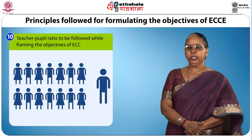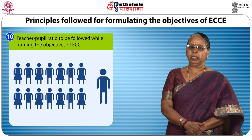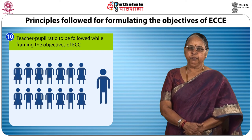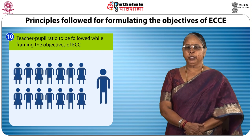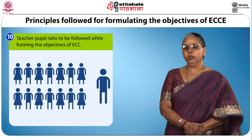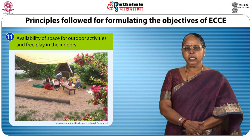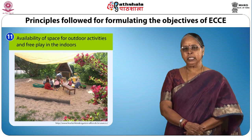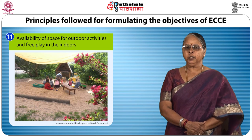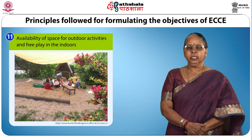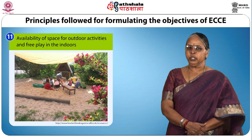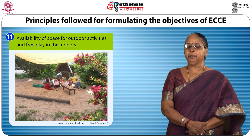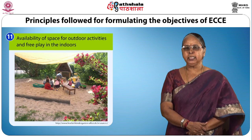The teacher-pupil ratio is to be followed while framing objectives of ECCE. In urban areas, the teacher-pupil ratio can be 1 to 25 and in rural areas 1 to 40. The last principle is availability of space for outdoor activities and free play, and equipment available based on the number of children and teachers — all to be kept in mind before planning the objectives of ECCE centers.